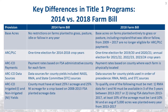Under the 2014 Farm Bill, producers made a one-time ARC or PLC election by crop and by farm that remained in effect for the 2014 to 2018 crop years for commodities other than seed cotton. For seed cotton, producers made an ARC or PLC election effective for the 2018 crop year. The ARC PLC provisions in the 2018 Farm Bill allow producers to make an ARC PLC election by crop and by farm for the 2019, 2020, and 2021 crop years. Starting with the 2022 crop year, producers will make an annual ARC PLC election.